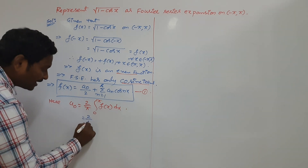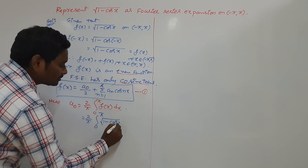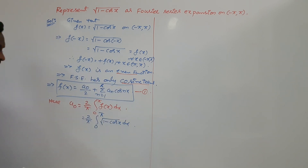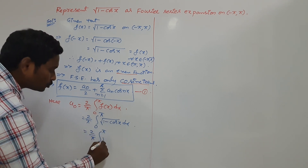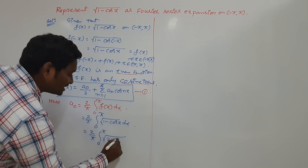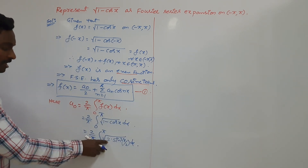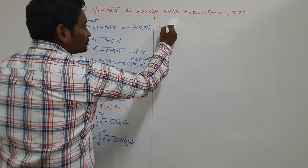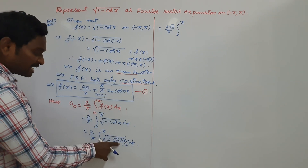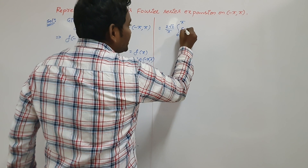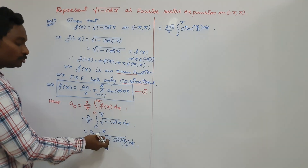Use the formula: a naught equals 2 by pi integral 0 to pi of f of x dx. Replace the values: 2 by pi integral 0 to pi of root over 1 minus cos x dx. To find this integration, use the formula: 1 minus cos x equals 2 sin square x by 2. So root 2 is a constant — take it outside. You get 2 root 2 by pi integral 0 to pi of sin of x by 2 into dx, since the square root cancels the square.